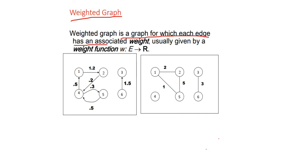A weighted graph is a graph in which each edge has an associated weight, usually given by a weight function w: E → R. Instead of simply labeling edges as a, b, c, each edge is assigned a numeric value. For example, the edge between vertex 1 and vertex 2 has a weight of 1.2. This is what is meant by a weighted graph.